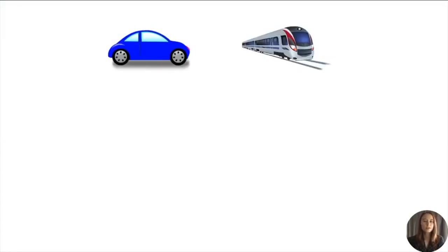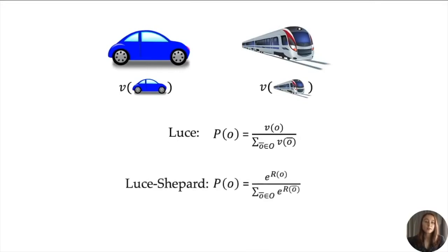Imagine that you have to choose how to commute. You could either drive or take the train. In your mind, each option has a value. Perhaps you prefer taking the train, so its value is larger than the car's. Luce's axiom simply states that each option will be chosen with probability proportional to its value. If we further assume that each option has some underlying reward, then Luce's shepherd's choice rule assigns it a probability exponentially increasing with its reward. Both formulations are pretty simple and intuitive.